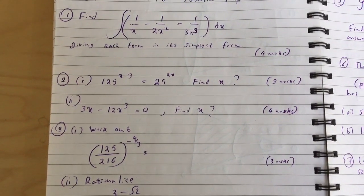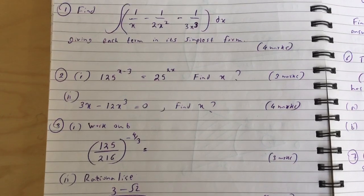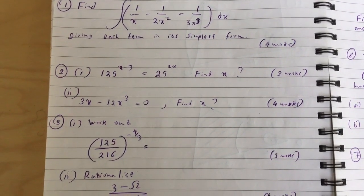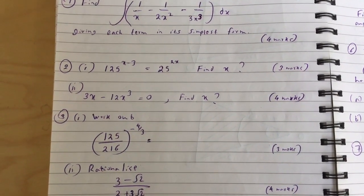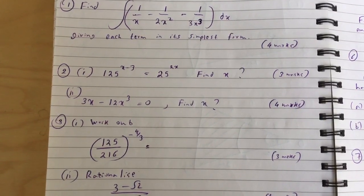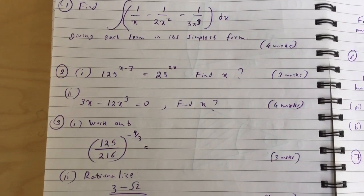Question 2: (i) 125 to the power of x minus 3 equals 25 to the 2x, find x. (ii) 3x minus 12x cubed equals 0, find x.